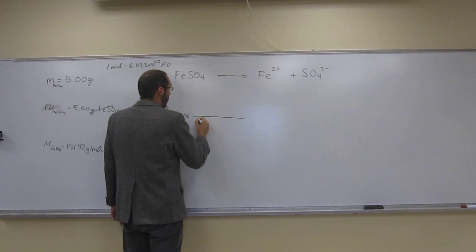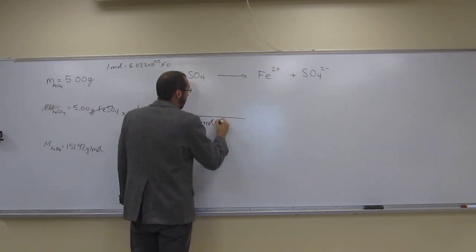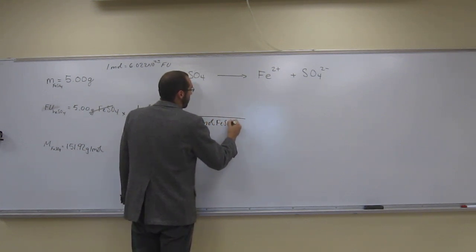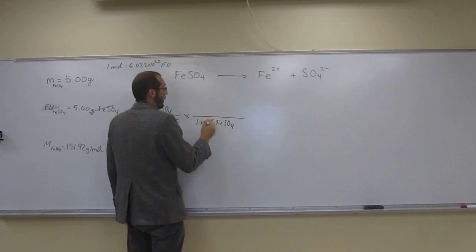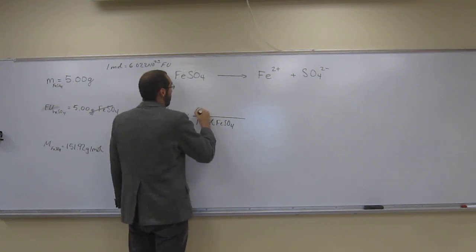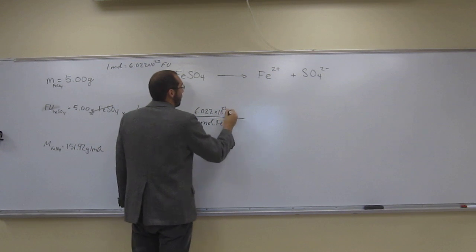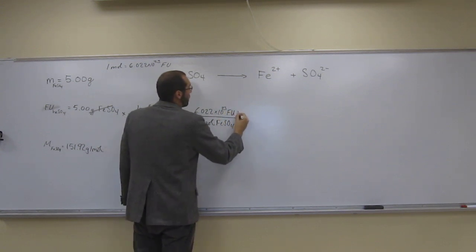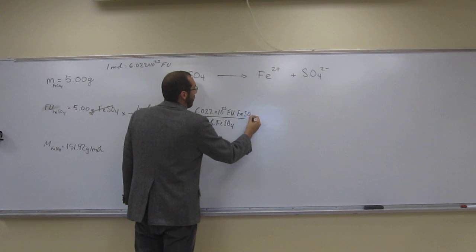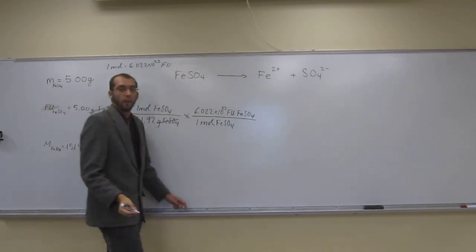So one mole of iron 2 sulfate is 6.022 times 10 to the 23rd formula units of iron 2 sulfate.